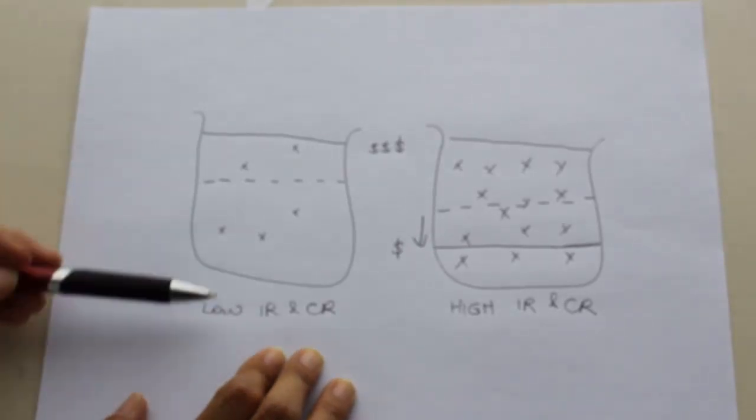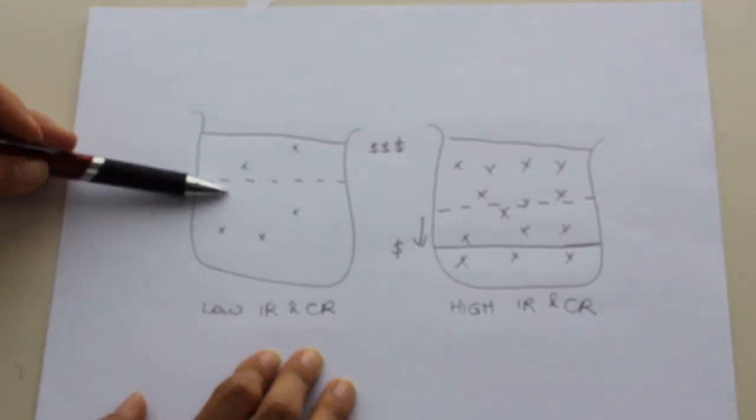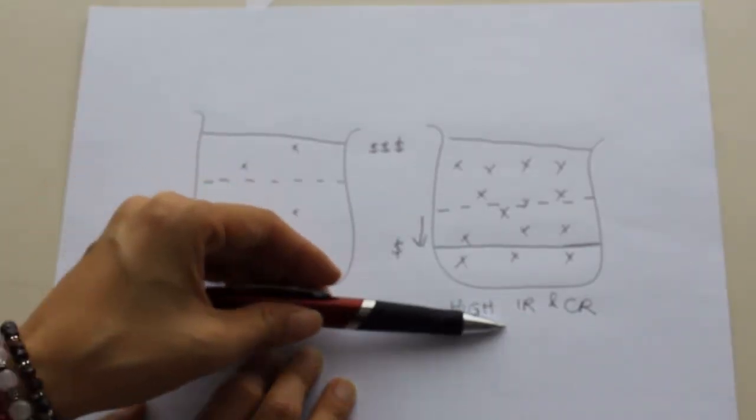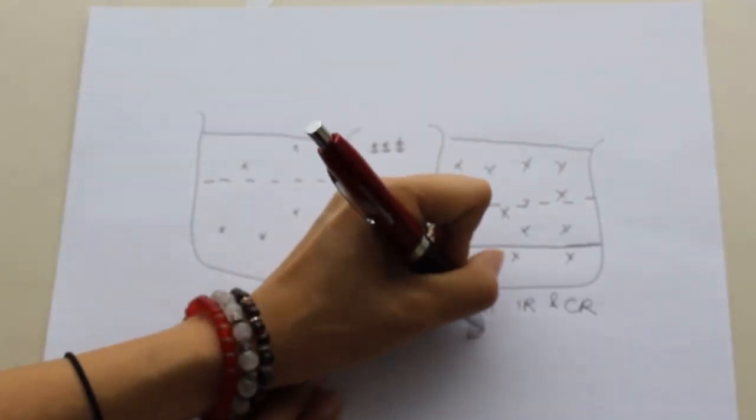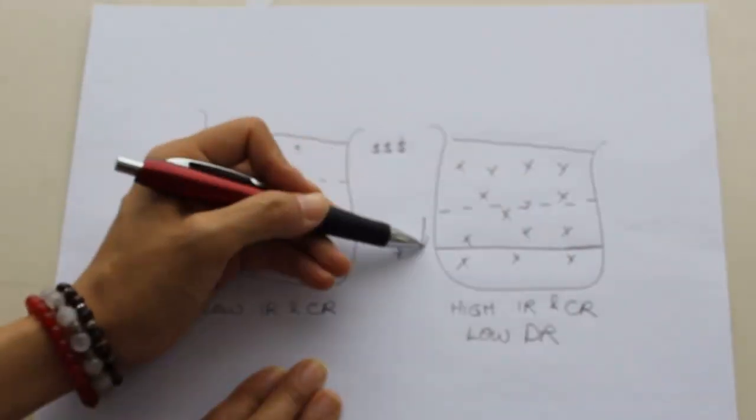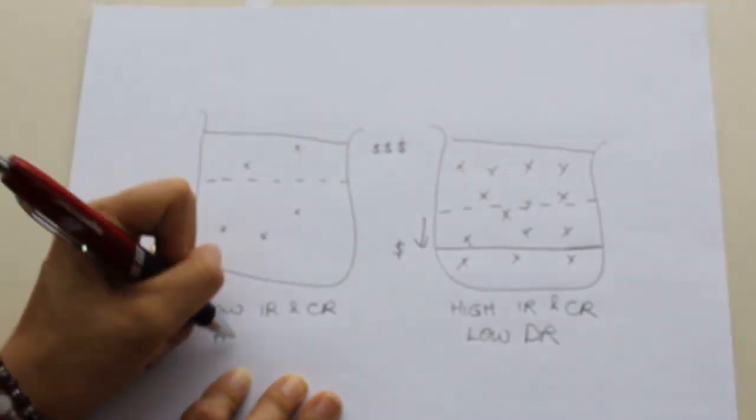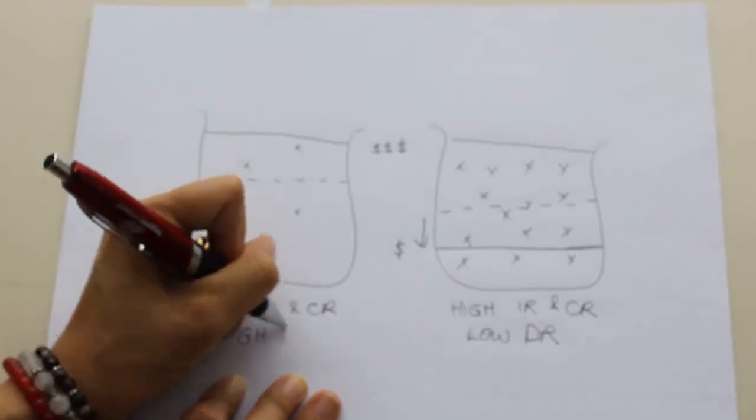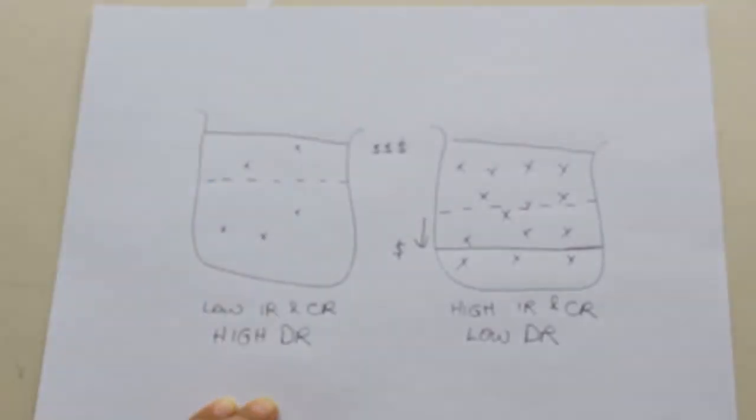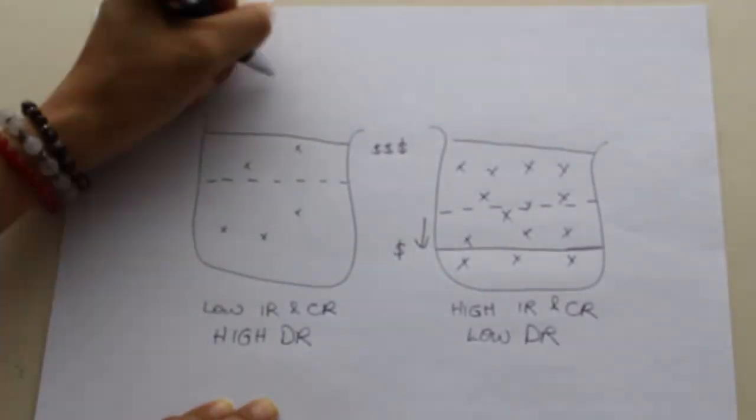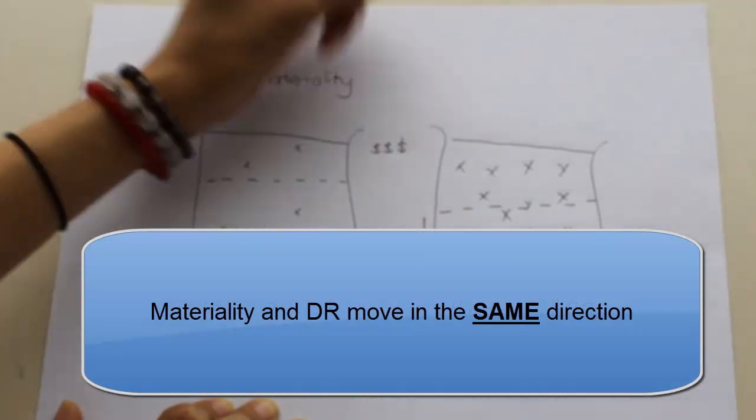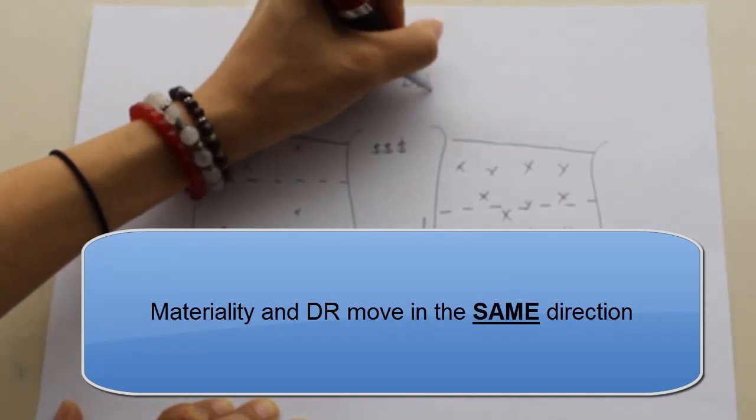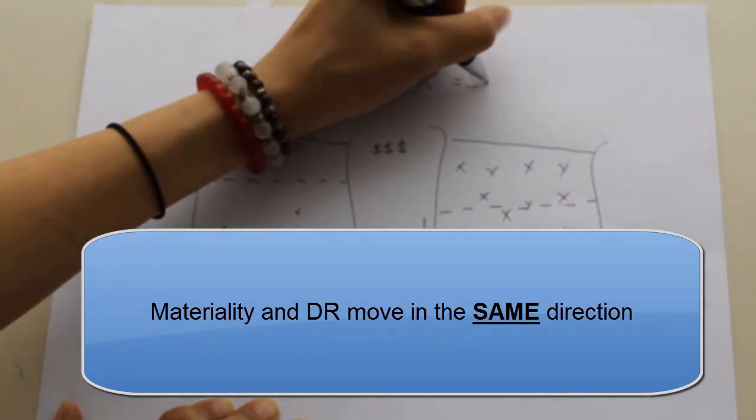So that's the reason why when we have low inherent risk and control risk, we have a higher level of materiality in comparison to where inherent risk and control risk are high. So in low detection risk situations, I'm going to have lower materiality compared to high detection risk situations. So my materiality and my detection risk move in the same direction.